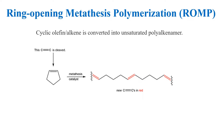In ring opening metathesis polymerization, strained cyclic monomers containing a double bond are polymerized in the presence of a catalyst. The final product obtained after polymerization is an open chain polymer with a double bond in its backbone.